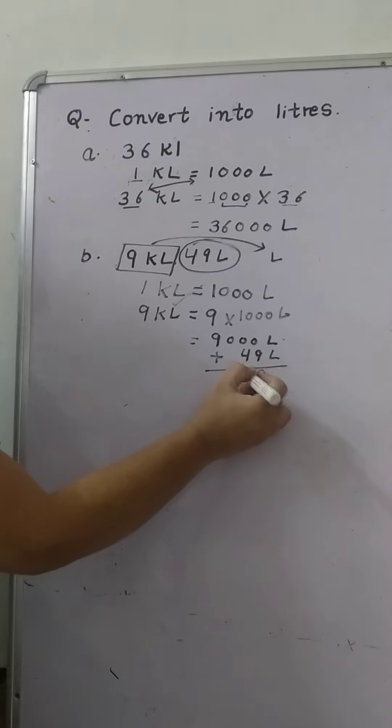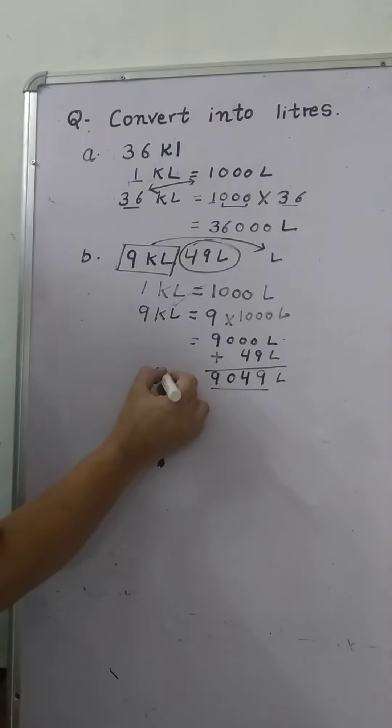0 plus 9 is 9. 0 plus 4 is 4. 0 here, 9 here. And unit is liter. So it is in liter. So it is an answer.